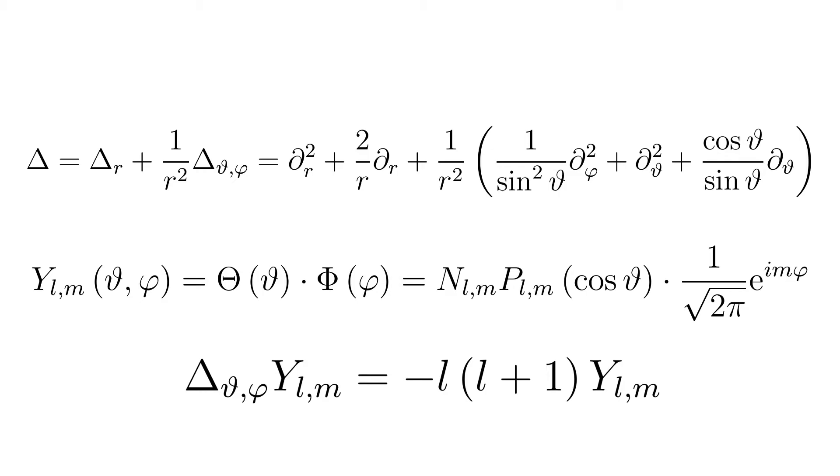It should be noted that the following conditions for the numbers nlm follow from the mathematical derivation of the spherical harmonics. n equals 1, 2, 3 and so on. l equals 0, 1, 2 and so on up to n minus 1. m equals minus l, minus l plus 1 and so on up to l minus 1, l.